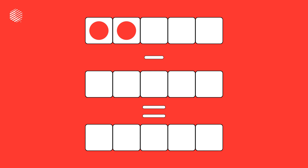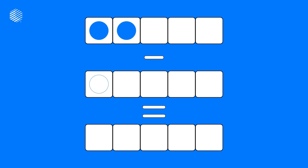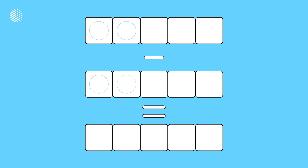2 minus 0 equals 2. 2 minus 1 equals 1. 2 minus 2 equals 0.